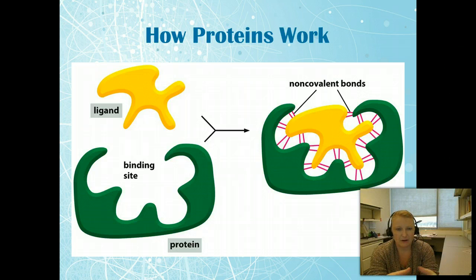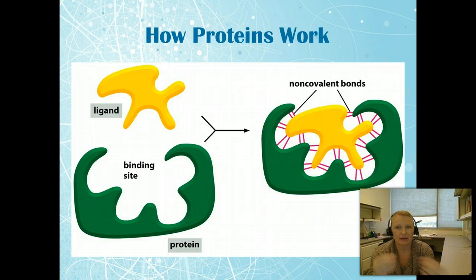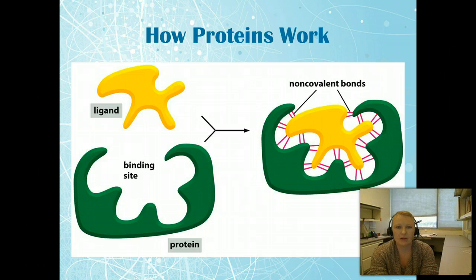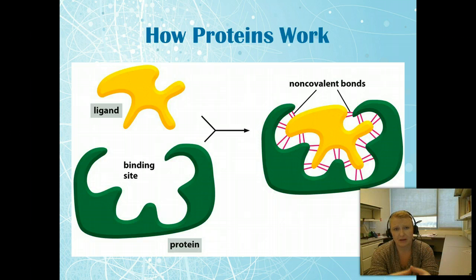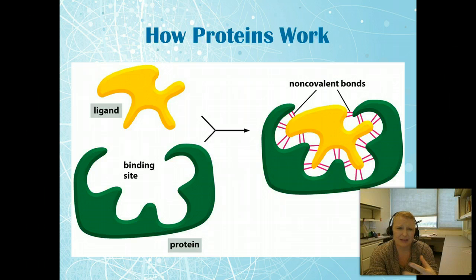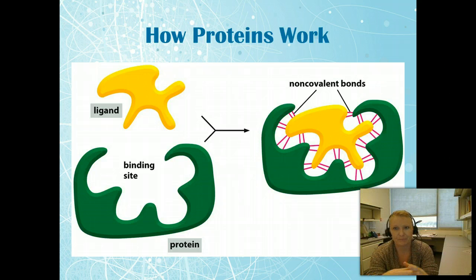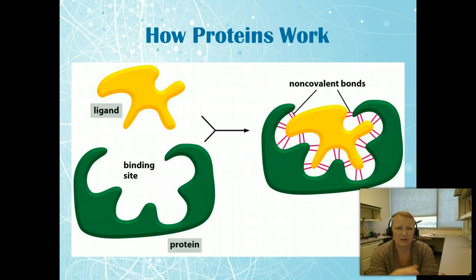Ligands are really specific for that binding site — it's more specific than even just shape. We're talking about how those amino acid R groups are interacting with each other. Kinetics plays a huge role in how long substrates and enzymes are bound together, and if one amino acid in the ligand changes, the binding strength may differ, altering KM and Vmax and downstream effects.